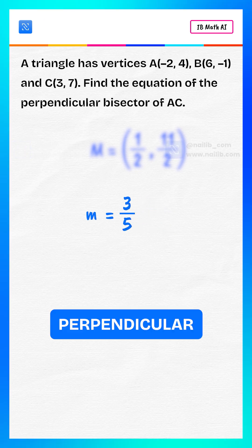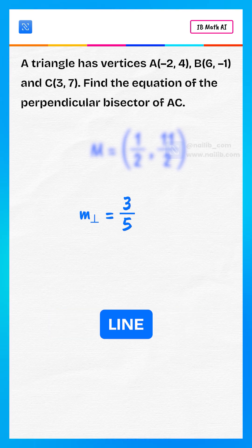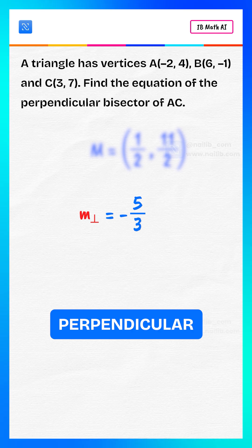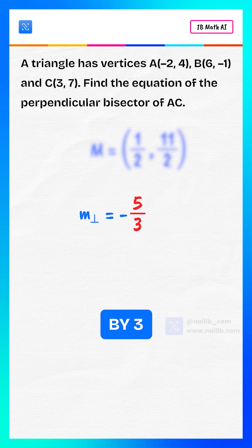Now, the slope of the perpendicular bisector. For a perpendicular line, we take the negative reciprocal of the slope. So perpendicular slope equals -5/3.